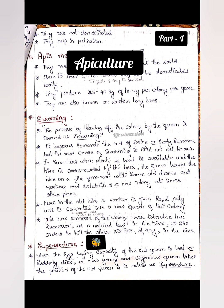Now we move on to the concept of swarming. The process of leaving of the colony by the queen is termed as swarming. This actually happens towards the end of spring or early summer. The reason is that in summer, when plenty of food is available, the queen wants to build a new hive.